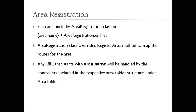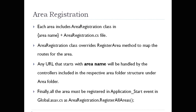Whenever any URL starts with an area name, it will be handled by the controllers included in the respective area folder structure. Finally, all areas must be registered in the Application_Start event in your Global.asax.cs file, and for that you call AreaRegistration.RegisterAllAreas().